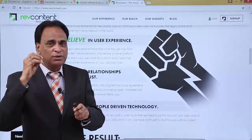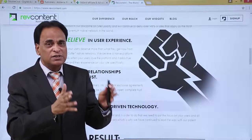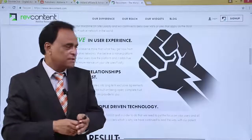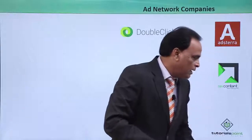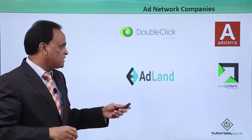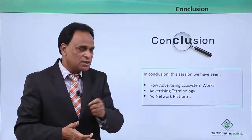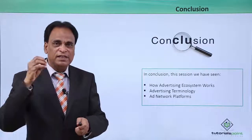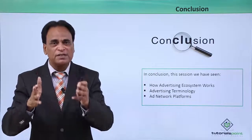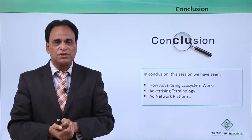You can check them out — they are very good and you can generate a lot of money as a publisher, and if you are an advertiser you can advertise your products, increase visibility, and create awareness. In conclusion, what we have seen in this video is how the advertising ecosystem works, advertising terminology, and various ad network platforms — DoubleClick, Astera, Adland, and RevContent — that offer immense benefits, features, and facilities for both advertisers and publishers. Thank you so much for watching, hope to see you again.